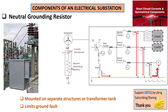We also have the resistance type — that's basically the one we're looking at here — where you implement a resistance between the neutral point and the ground. This resistance limits the fault current to a value that is safe and will not cause trouble. But remember, that limitation must still allow the current transformer to detect and operate. If the current falls below the CT's detection threshold, you are defeating its purpose and eliminating the circuit breaker's ability to interrupt the fault.